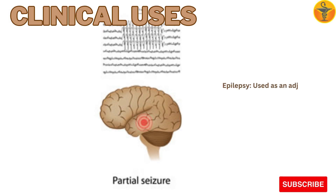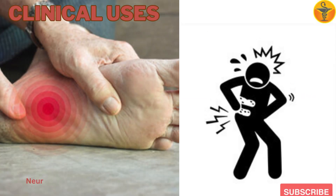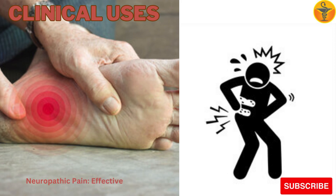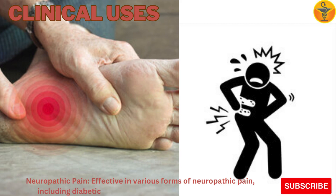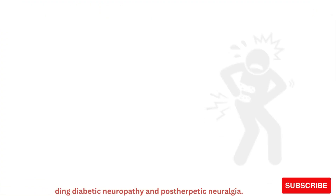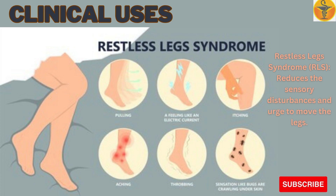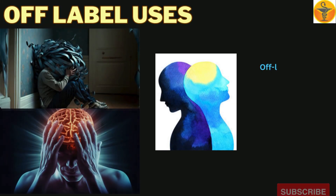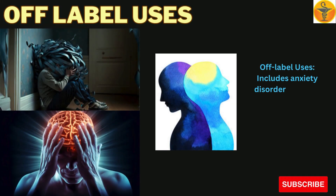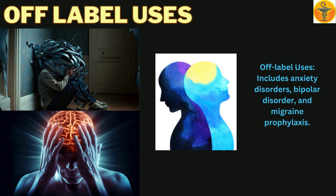Clinical Uses. Epilepsy: Used as an adjunctive therapy for partial seizures. Neuropathic Pain: Effective in various forms of neuropathic pain, including diabetic neuropathy and postherpetic neuralgia. Restless Legs Syndrome (RLS): Reduces the sensory disturbances and urge to move the legs. Off-label uses include anxiety disorders, bipolar disorder, and migraine prophylaxis.